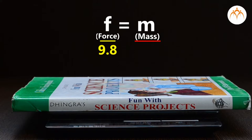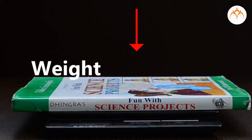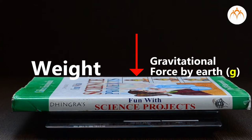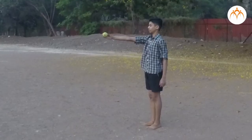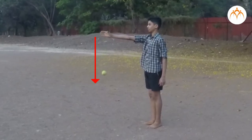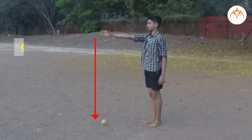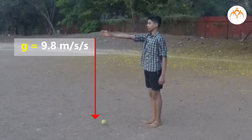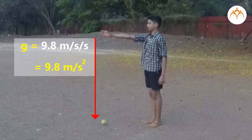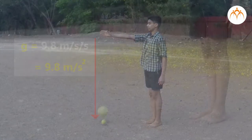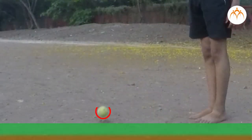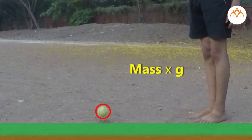Weight is related to mass, and many of us get confused between the two terms. In fact, they are conceptually very different. Weight of an object is the gravitational force exerted on it by Earth. In freefall, an object accelerates downwards at G, which equals 9.8 meters per second squared near Earth's surface. An object's weight is approximately its mass multiplied by gravitational force, and it points downwards.